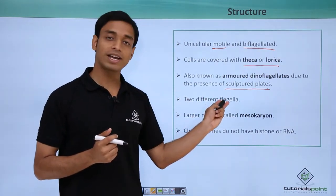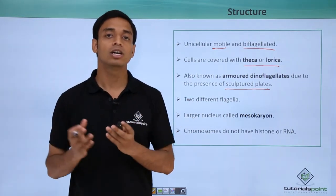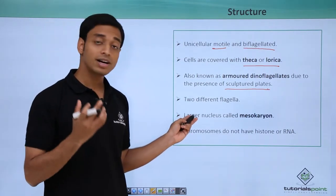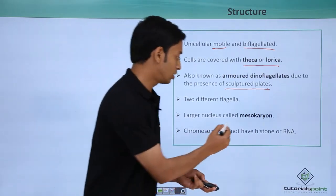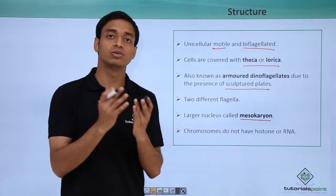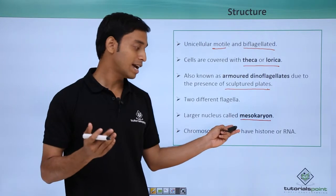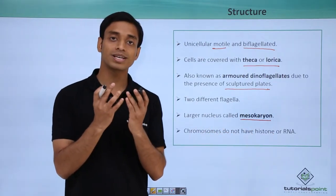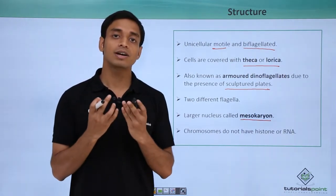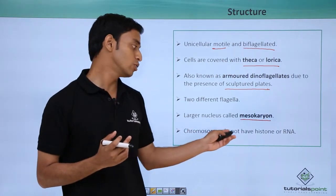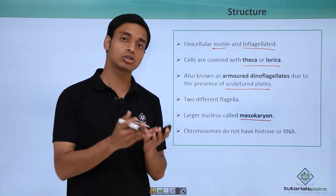They have two flagella which can be oriented transversely or longitudinally. They have a quite large nucleus, and this type of large nucleus is termed a mesocaryon. Their chromosomes do not have histones or RNA — unlike normal eukaryotes such as animals, which have histone proteins — so in spite of being eukaryotes, dinoflagellates lack histones.